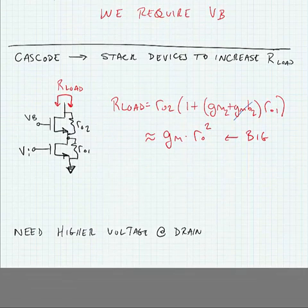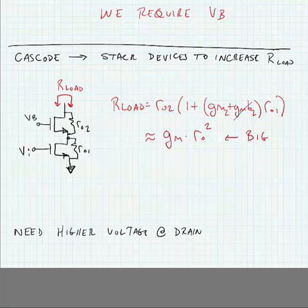And you can see how that would improve the output characteristic of our amplifier if we had such a big impedance. One thing that we need to note though is that we still have to generate a bias voltage for the cascode device here. And we need a higher voltage at the drain because both of these transistors need to stay saturated.